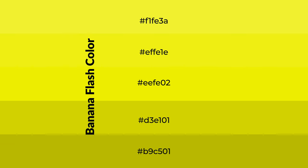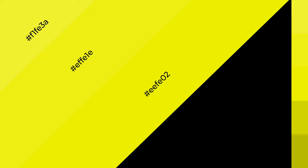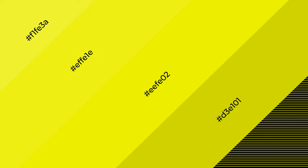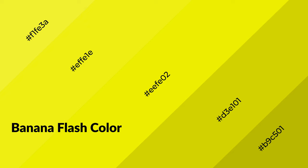To generate shades of a color, we add black to the color, and it is used in patterns, 3D effects, layers and shades create depth and drama. Banana Flash is a warm color, and it emits cozier and active emotion.